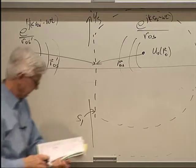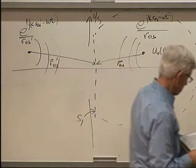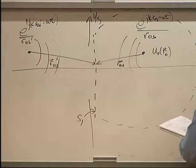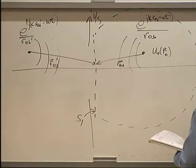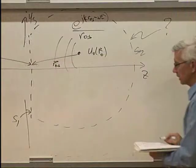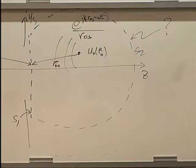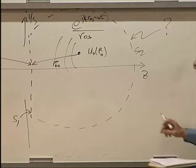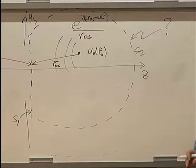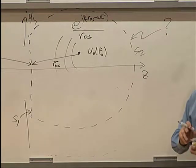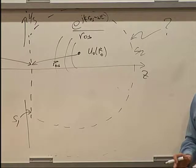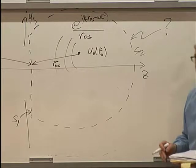Now, we've still got S2. So what about S2? How do we evaluate that? Well, what we'd like to say is that the integral over S2 goes to zero. That would make that integral theorem of Helmholtz and Kirchhoff very easy. And we can say, as the field, as the radius goes to infinity,